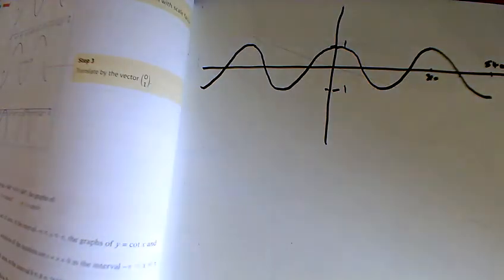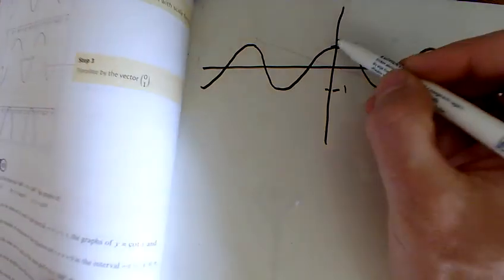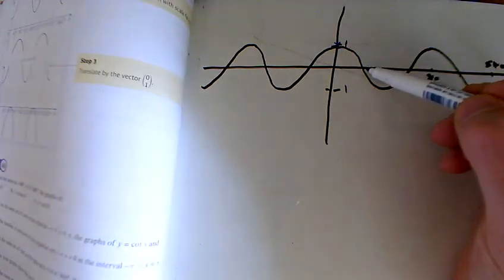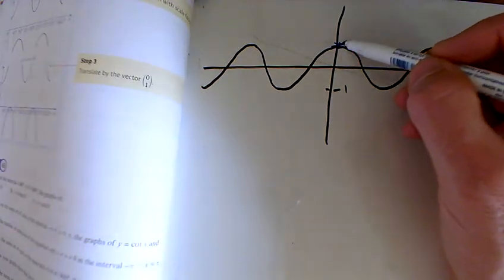So there's the original cos graph, and what we're doing now is we're doing 1 divided by that. Well 1 divided by 1 is 1, and then it's going lower and lower, so 1 divided by it will go higher and higher.